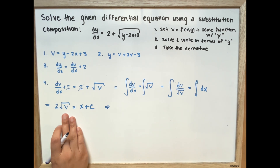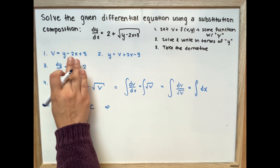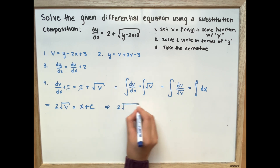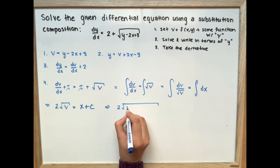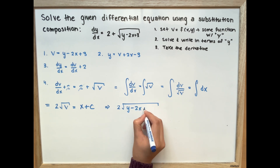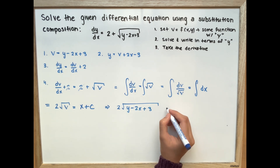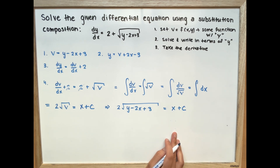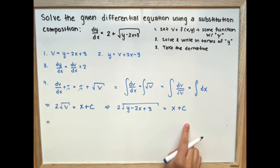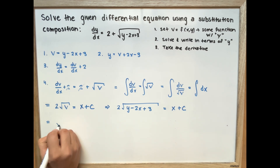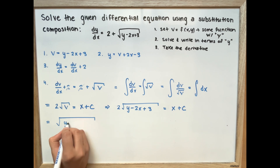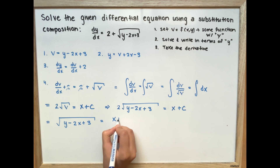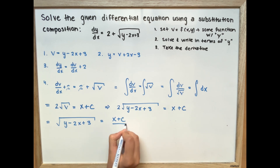Now we're going to substitute v back as y minus 2x plus 3. So we have 2 times the square root of y minus 2x plus 3, which is equal to x plus c. Simplifying, the square root of y minus 2x plus 3 equals x plus c over 2.